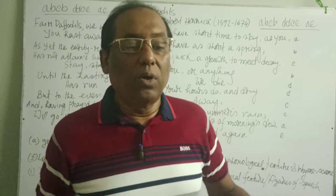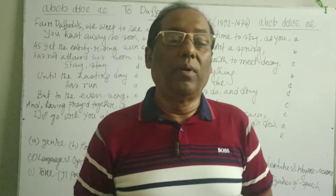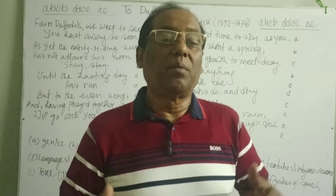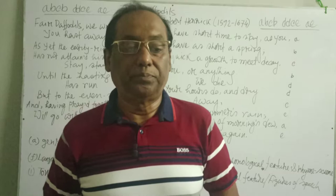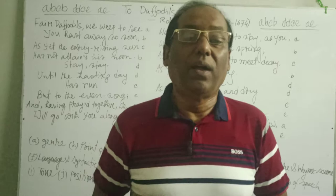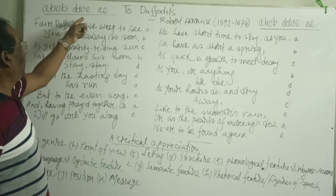What is the phonological feature of the poem? The rhyme and rhythm of the poem can be defined as very pleasant to hear. We find end rhyme in the poem. The rhyme scheme of the first stanza can be described as A, B, C, B, D, D, C, E, A, E.